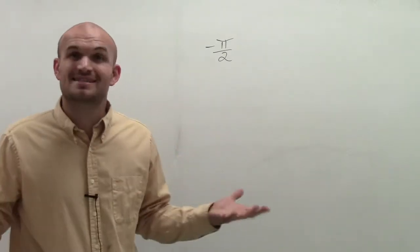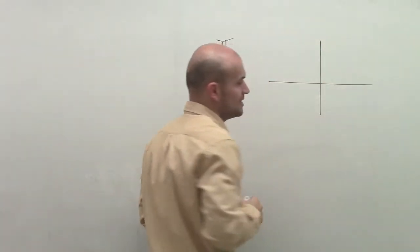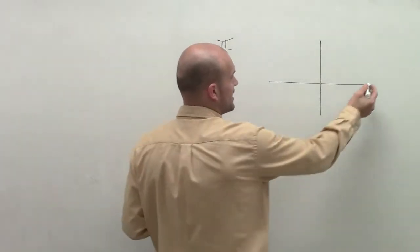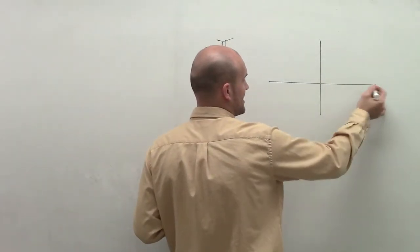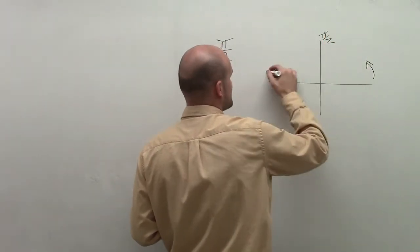So the first thing we need to do is understand where exactly this angle is. If I'm going to draw a coordinate axis here, we know that if we start in standard form, we'd have 0. And then in the positive direction, our first angle is pi halves and then pi.